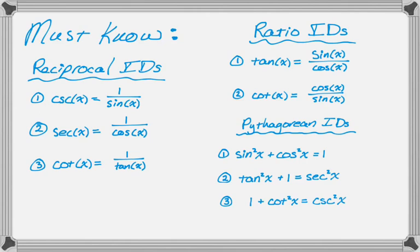You have three reciprocal, you have two ratio, and you have three Pythagorean identities. You really need to know those or you're kind of not going to be able to do any of the problems.